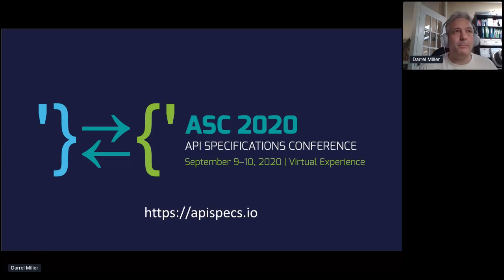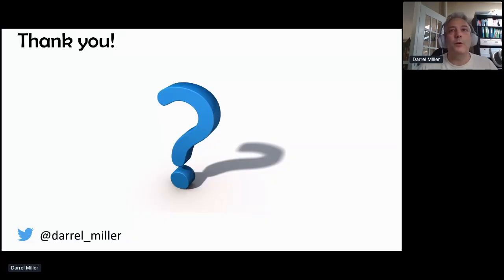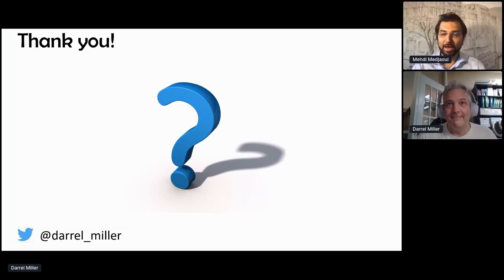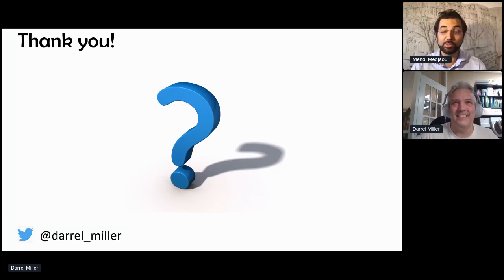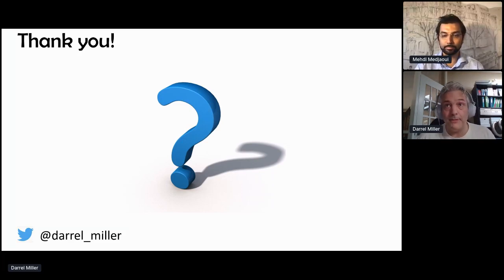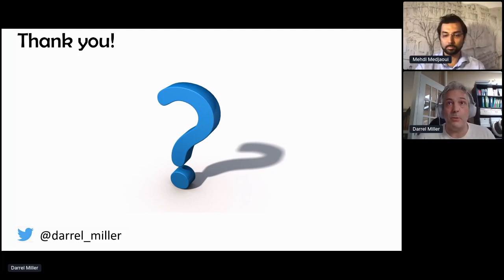There are a couple of minutes left, so let's open up for questions. Thank you very much, Darrell. One question is: does schema work on things other than JSON? If not, any plans to help describe representations that aren't JSON in OpenAPI specifications? Absolutely — this is what the alternative schemas proposal is. It is an idea to be able to point to any other kind of schema type, whether it's XSD, whether it's a protobuf schema. That's exactly what that alternative schema is designed to enable. Go over to the GitHub repo and take a look at that alternative schemas proposal.